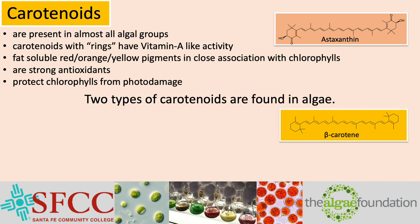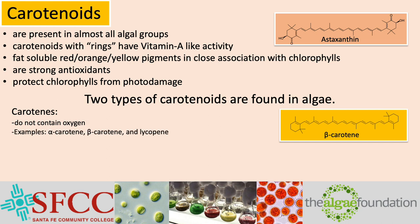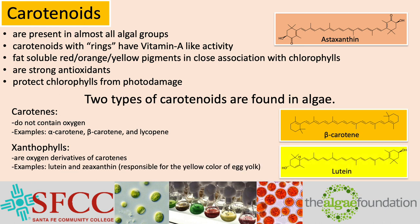There are two types of carotenoids found in algae. The carotenes do not contain oxygen atoms in the molecule — examples are alpha and beta carotene, which are the orange color in carrots, and lycopene, which is the red color in tomatoes. The other class is the xanthophylls, which are oxygen-containing derivatives of carotenes. Examples of xanthophylls are lutein and zeaxanthin, both responsible for the yellow color of egg yolk. So: carotenes — no oxygen; xanthophylls — oxygen.